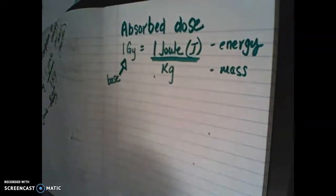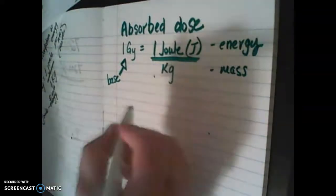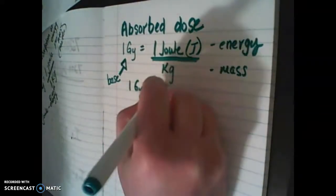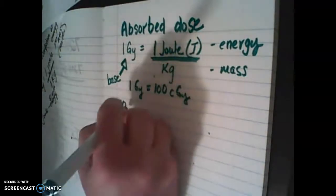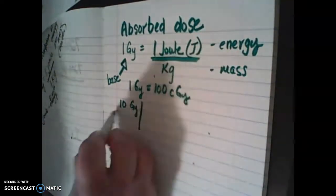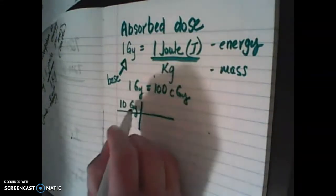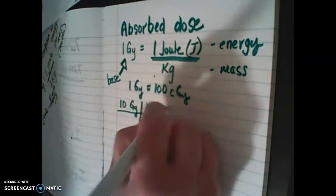We can use grays in our line of work, and we can also use centigrays. If we have one gray, that's going to be equal to 100 centigrays. So this is our conversion factor. If we have 10 gray and we want to know how many centigrays are in 10 gray, we're going to set up our conversion. We are starting with gray — this is what we know — so we always put what we know on the bottom. We know that 1 gray is equal to 100 centigray.